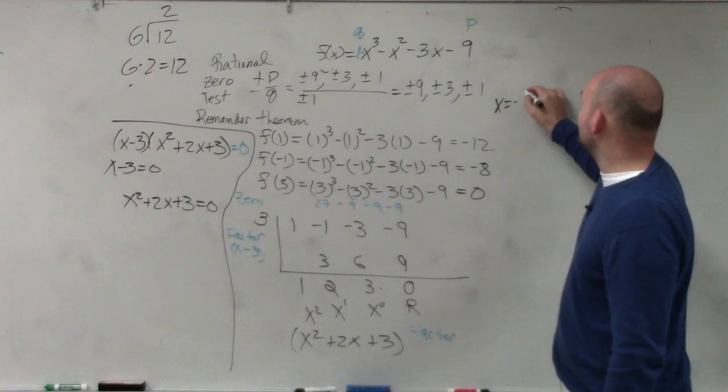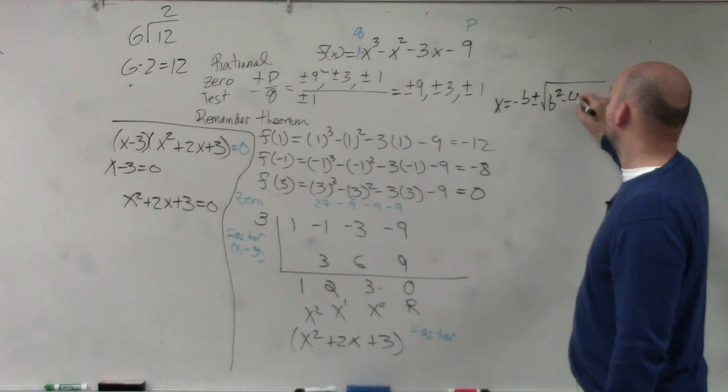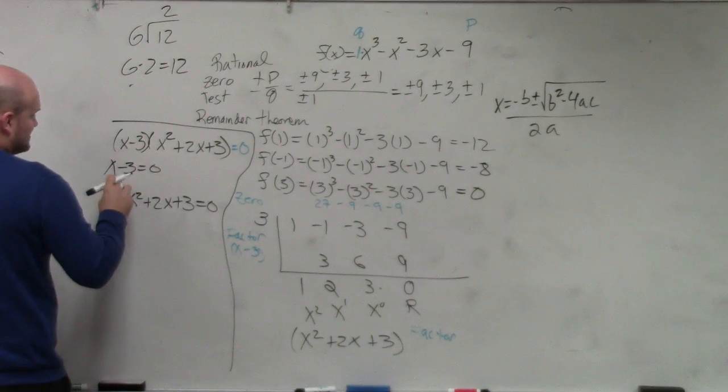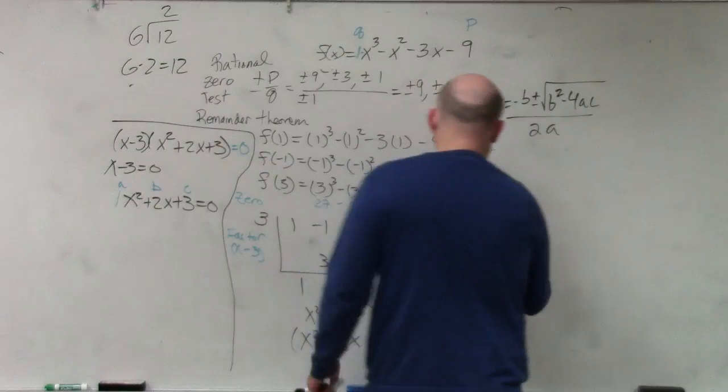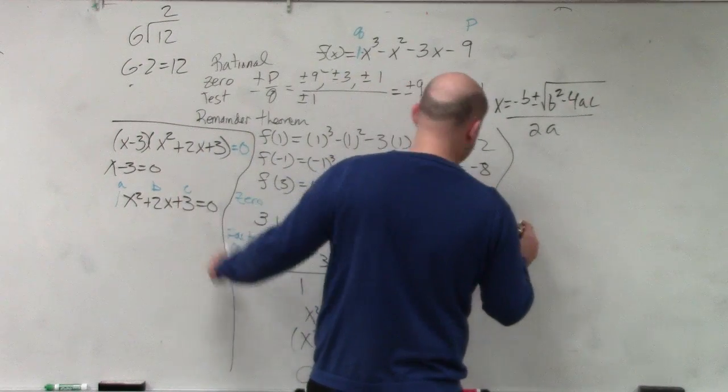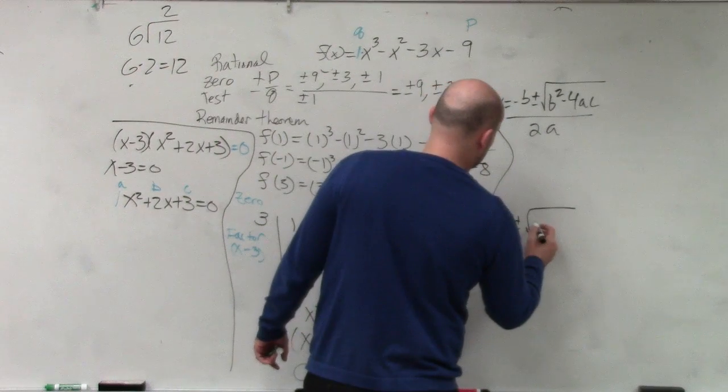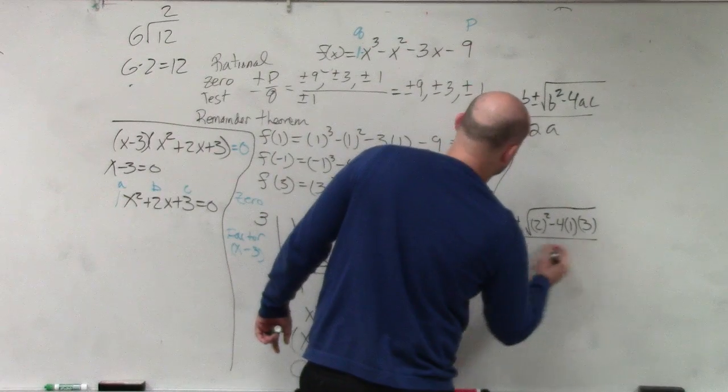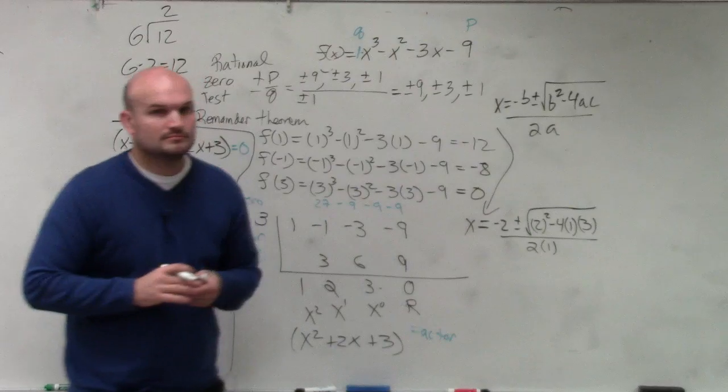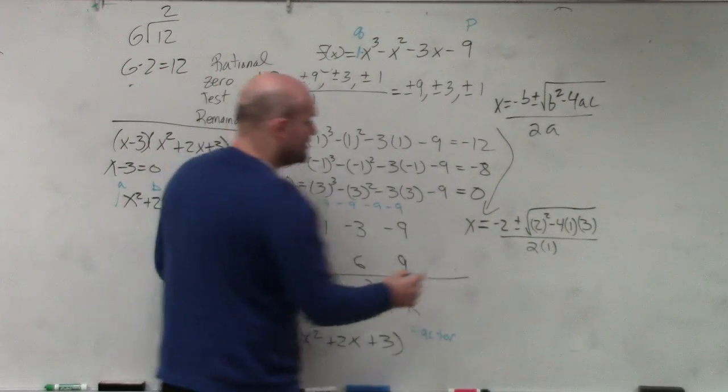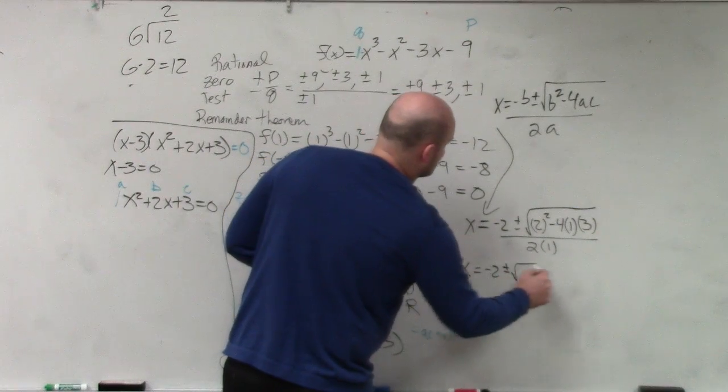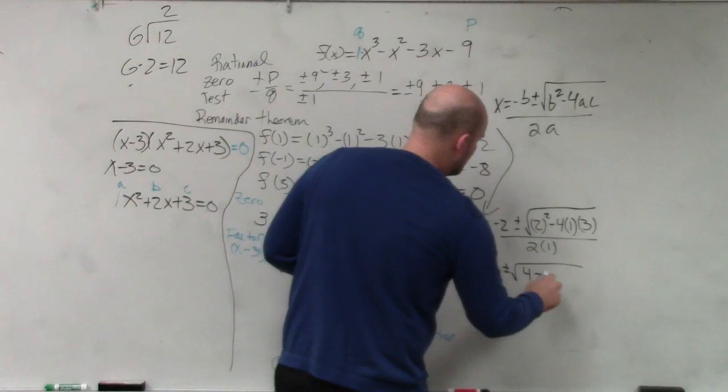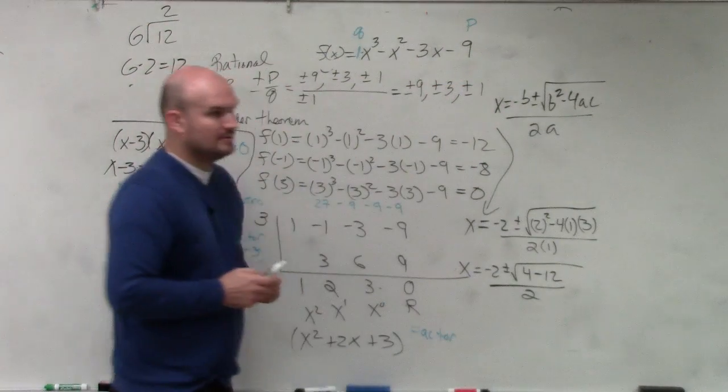So I would do quadratic formula. You will need to know the quadratic formula. So if you do not have it memorized, I would make sure you memorize it. That's my a, that's my b, and that's my c. So we have x equals opposite of b which is negative 2, plus or minus the square root of 2 squared minus 4 times a times c, all over 2 times a. So now x equals negative 2 plus or minus, 2 squared is 4, negative 4 times 3 is negative 12, divided by 2.